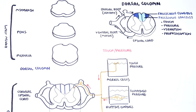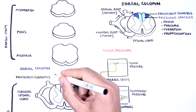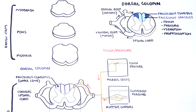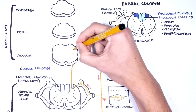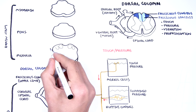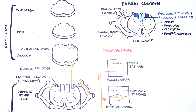This cell is called the first-order neuron. The dorsal column is divided into two sections: the fasciculus cuneatus and the fasciculus gracilis. The fasciculus cuneatus is responsible for carrying sensory information from the upper body. Because this is the cervical spinal cord, this constitutes the upper body. So this first-order neuron will travel up the fasciculus cuneatus section of the dorsal column towards the medulla, where it will synapse with the second-order neuron at the nucleus cuneatus.